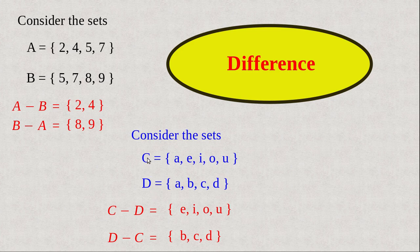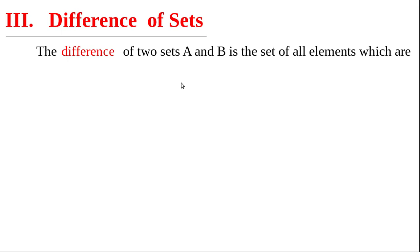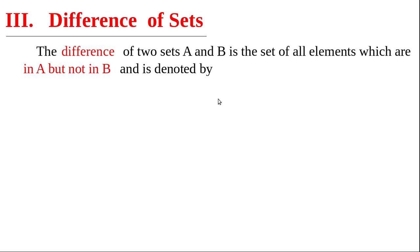Now write in your notebook. Write the heading: Difference of Sets — the third operation. The difference of two sets A and B is the set of all elements which are in A but not in B, and is denoted by A minus B. Now let us write the set builder form of A minus B.